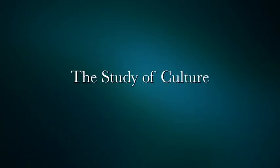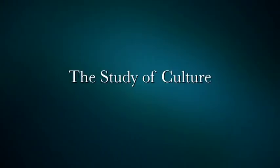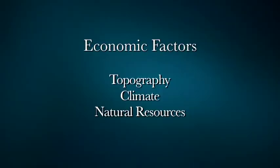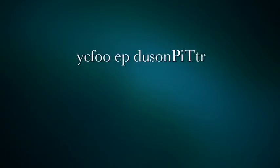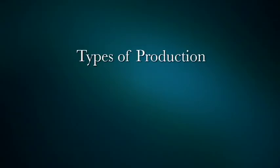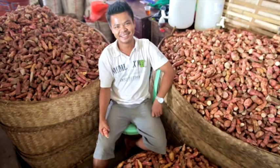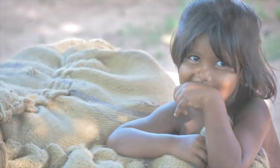There are many economic factors to consider when studying a culture. To recap, it's important to observe how topography, climate, and natural resources influence the economic activities people perform. Members of a culture meet their needs through the production of goods and services. There are three types of production in most cultures: service, agriculture, and industry and manufacturing. Understanding economic systems and how people meet their needs and wants will help greatly in learning how to study the various cultures of the world.